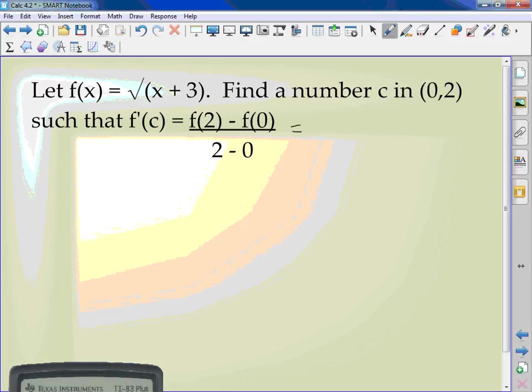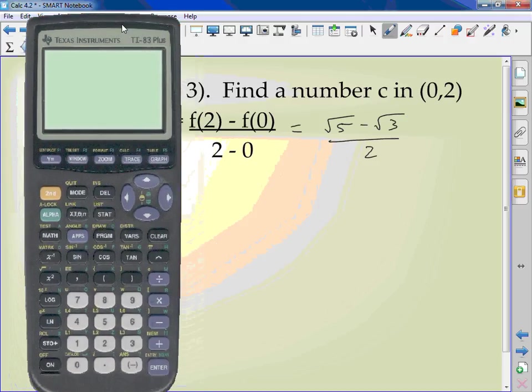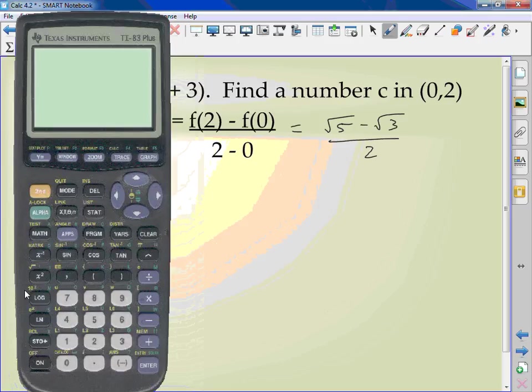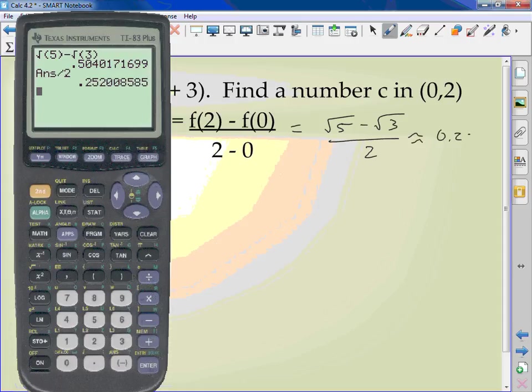Try this one. When I put in the 2, I have the square root of 2 + 3 is 5, minus the square root of 0 + 3 is 3, over 2 - 0 is 2. I'm going to find the approximation, square root of 5 minus square root of 3, I get 0.504, divide by 2. This is about 0.252.